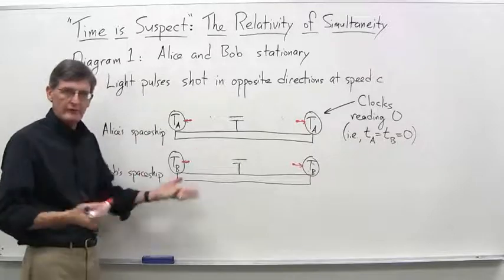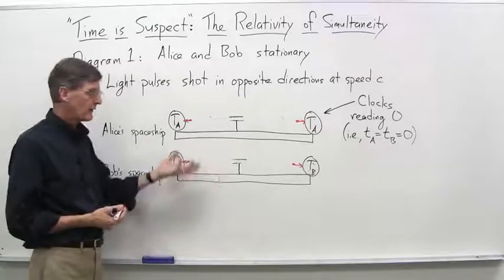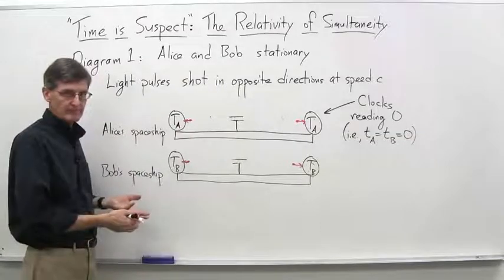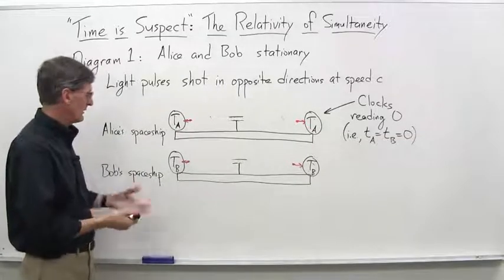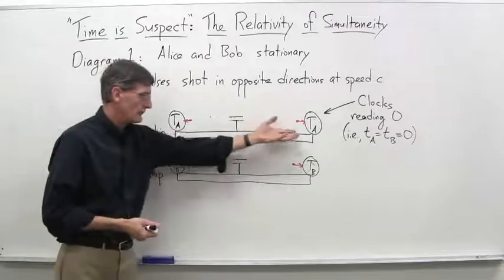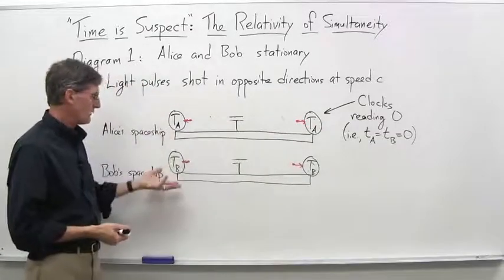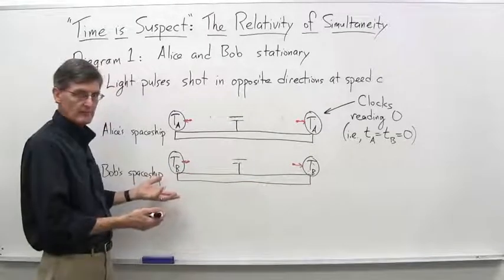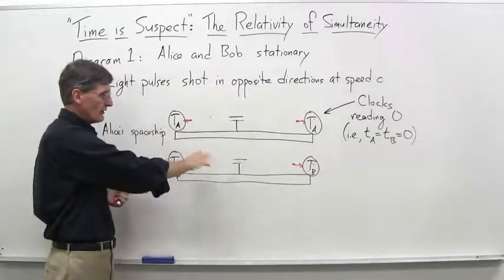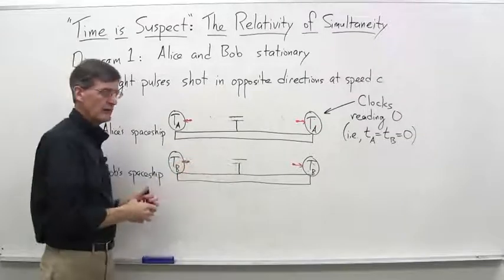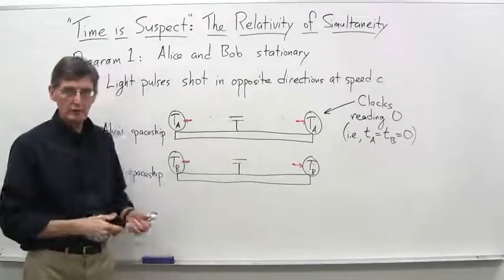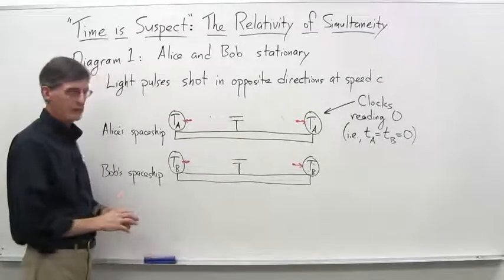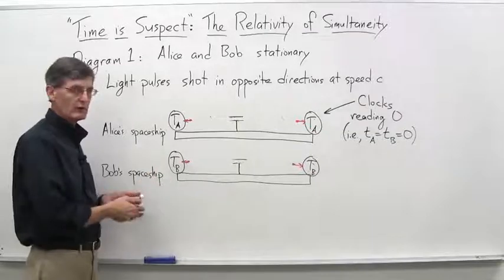So you'd say, well, what's the big deal? Really, there is no big deal at this point. We're just reminding ourselves what would happen if everybody was stationary at this point. Alice would see her clocks trigger at T A. Bob would see his clocks trigger at T B. Everything is stationary. Everything is symmetrical. So T A would equal T B, and there'd be no problem at all. Nobody would worry about anything about their clocks being synchronized or whatever else. So that's that situation.